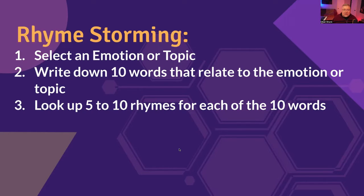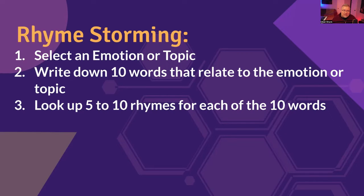Step three is to look up five to 10 rhymes for each of those 10 words. You can use a rhyming dictionary, you can use sites like RhymeZone, rhymebrain.com. One of my students told me about a site called Rhyme Wave, which is super cool. But here's the catch: you're not only looking for words just because they rhyme. You want to make sure they fit the topic of your song. If they don't fit the topic or give you a little jolt of creative inspiration, don't include them. We want to be selective and pick the words that actually give you more ideas.